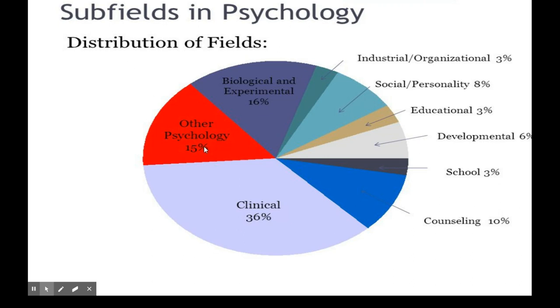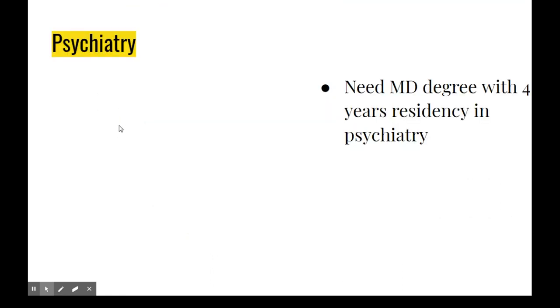Other psychology is a mix of different things — these are all no larger than 3%. So if you have great dreams of becoming a sports psychologist, good luck. There aren't many jobs out there, but they exist.